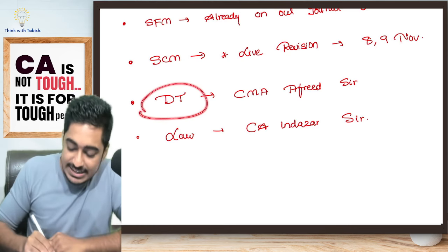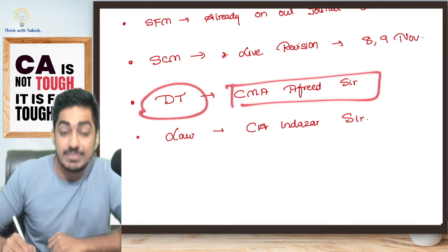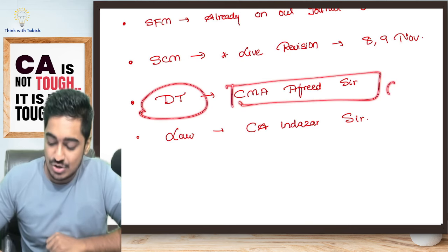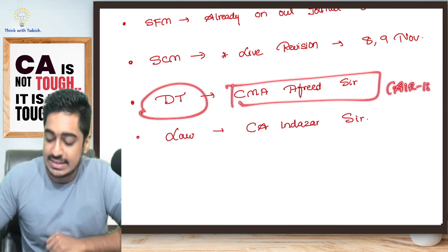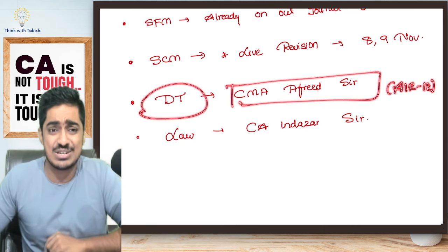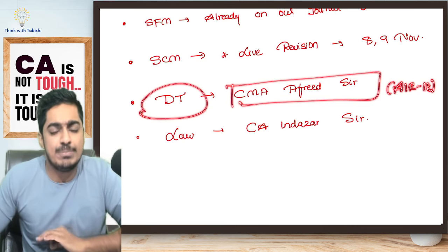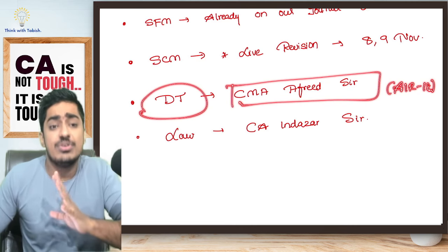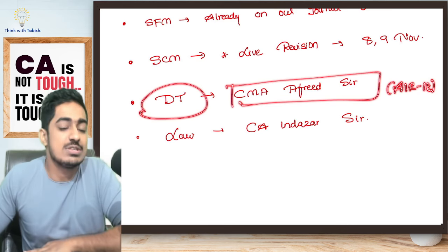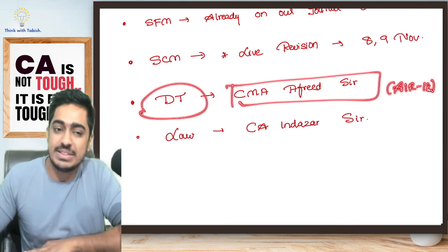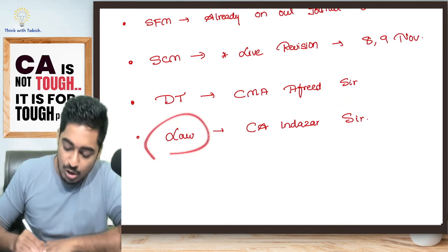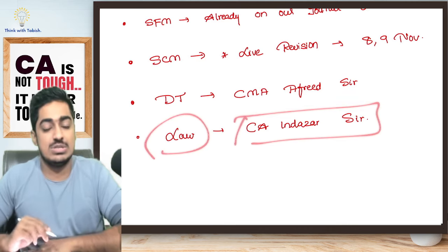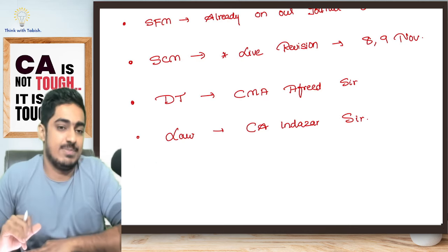But this is going to come on our YouTube channel Think with Tabish. For CMA Final DT, Afrid sir will be handling the marathon. He has secured All India Rank 18 in the CMA Final Examination. Afrid sir, Adipoli, Kiddilang Conceptual Clarity, Kiddilang Question Solving, absolutely free of cost to help you ace your December 24th CMA Final Examination. That will be there. Dates will be announced soon. And law will be handled by CA Induzar sir, who is taking classes for CA as well as for CMA.